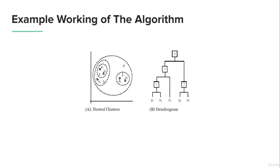Let's look at an example. On the left side you can see a figure with different clusters, and on the right side we have a dendrogram of the same clusters. The biggest cluster is number four at the top, which is the root node of the dendrogram, and the others are leaf nodes. The closest clusters are merged into one cluster, and the smallest clusters are the individual data points P1, P2, P3, and P5.